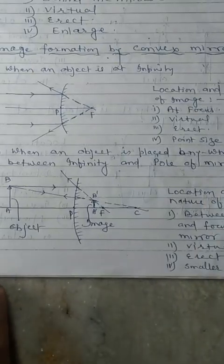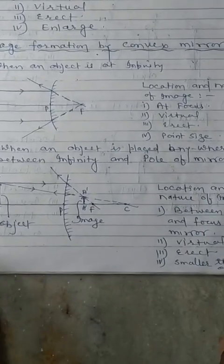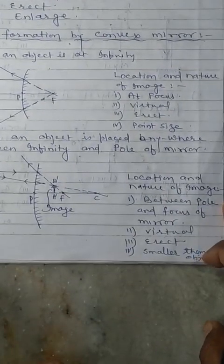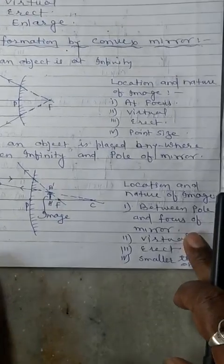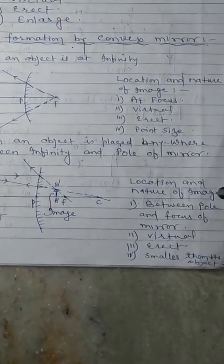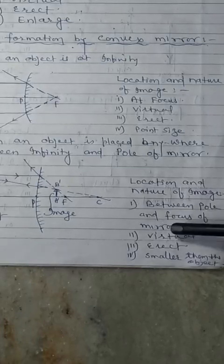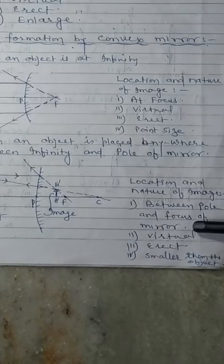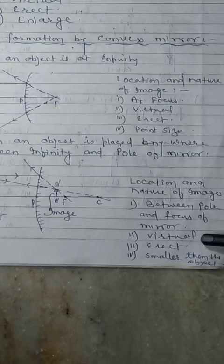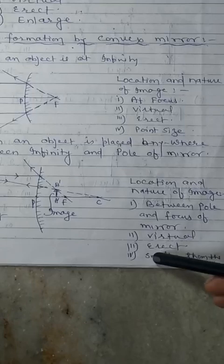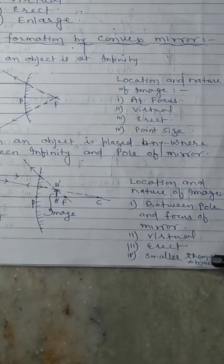So when an object is placed anywhere between infinity and the pole of the mirror, the image will be formed between pole and focus of the mirror. Second, the image will be virtual. Third, erect. And smaller than the object — diminished size.